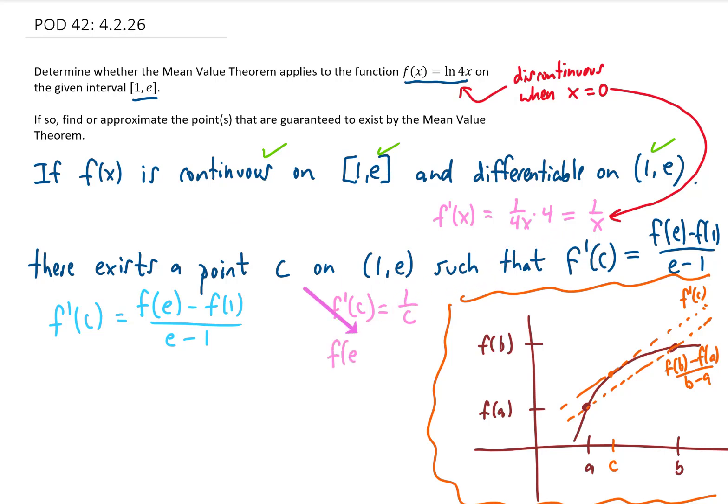What is f of e? Going back to our original function, if we plug e into it, we get the natural log of 4e. I'm just going to leave it like that for now. Also in our formula, the mean value theorem gives us f of 1. If we look at our original function and plug 1 into it, we get the natural log of 4.